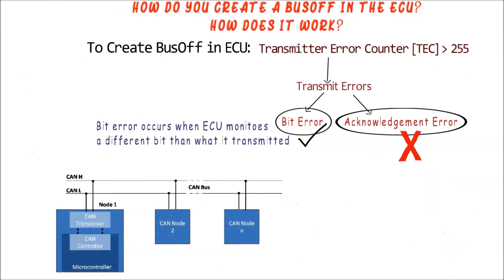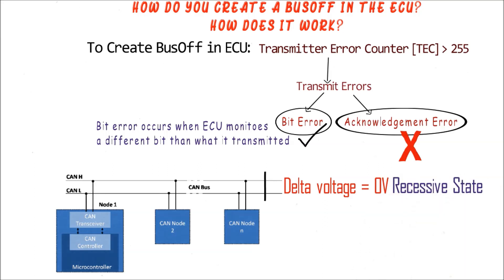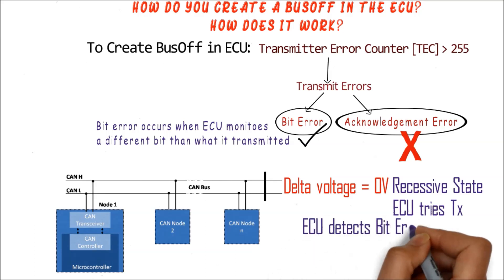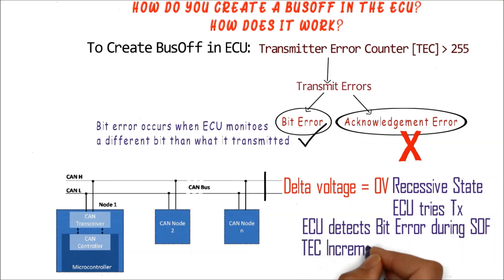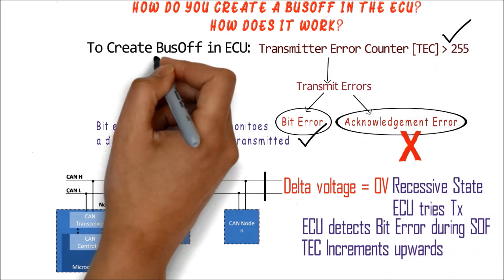If you force both CAN high and CAN low lines to 2.5V — or make the differential voltage 0V by simply shorting CAN high and CAN low together — then you can force the bus into a recessive state. Now your ECU will think the bus is idle and try to transmit its frame. But during the first bit, that is the SOF bit, it finds that it sent a dominant bit but the CAN bus shows a recessive state. So a bit error is detected at the very first bit of the frame, meaning the TEC will increment. Upon multiple error flags and multiple transmission retries, the TEC will keep on incrementing until it crosses 255, and then the ECU goes into bus-off.